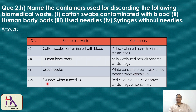So to summarize the waste containers: yellow non-chlorinated plastic bag for contaminated cotton swabs and human body parts; white puncture-proof, leak-proof, tamper-proof container for used needles; and red-colored non-chlorinated plastic bag or container for syringes without needles.